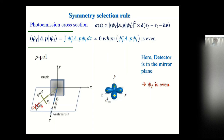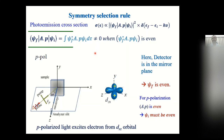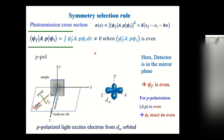Similarly, for the d_xz state, you need polarization lying in the xz (emission) plane — P-polarization. Since the photon beam makes an angle with respect to the detector, the polarization vector aligns along one of the d_xz orbital lobes, giving large intensity for d_xz with P-polarized light. We use this polarization symmetry selection rule for the probe pulse and look at the signal. The oscillations visible in the signal come from lattice vibrations — when two atoms vibrate, hybridization changes, which shifts the Fermi level, causing intensity modulation. If you look at the integral intensity 0.1 to 0.2 eV above the Fermi level, you see this kind of modulation.